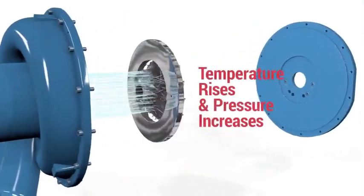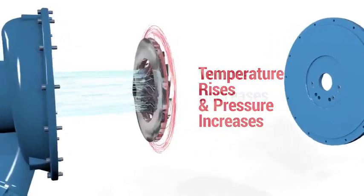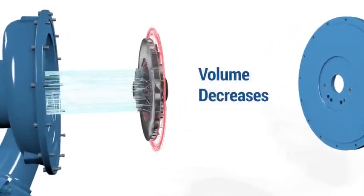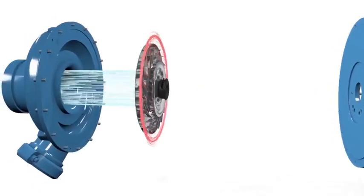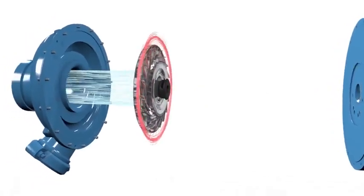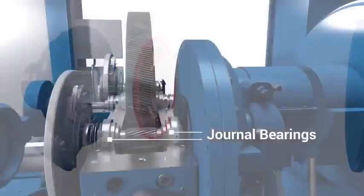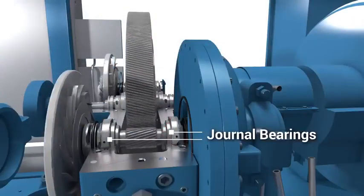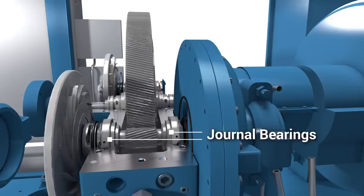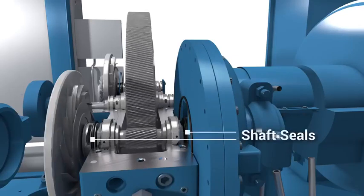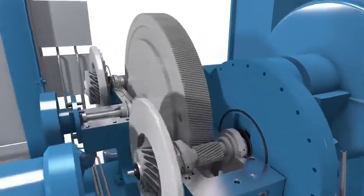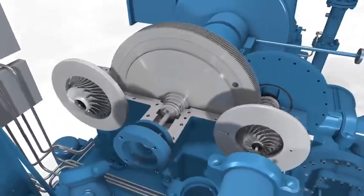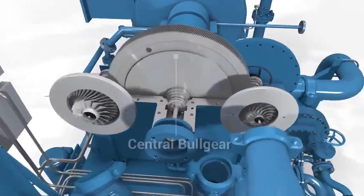With each stage of compression, the air or gas temperature rises, pressure increases, and volume decreases. In addition to the impellers and radial diffusers, the rotor assembly consists of a pinion supported by two self-centering tilting or flexure pad journal bearings. Shaft seals on the impellers prevent gearbox oil from contaminating the compression chamber.